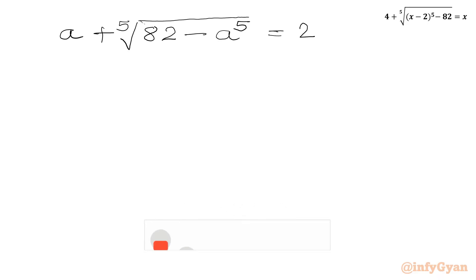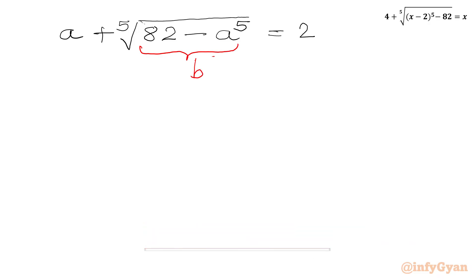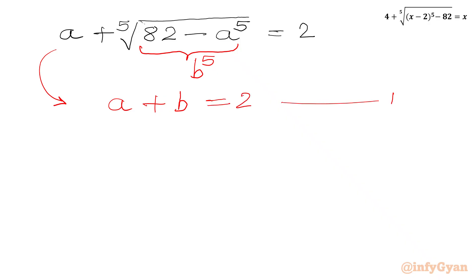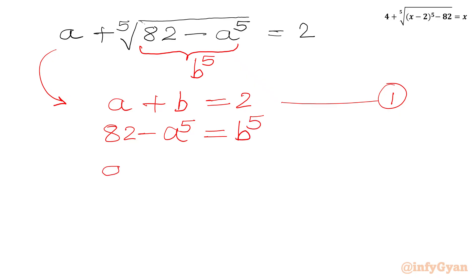Now we will use a second substitution. Let the radicand equal B power 5, so our equation becomes A plus B equal to 2. This is equation number 1. From the substitution, 82 minus A power 5 equals B power 5, which gives us A power 5 plus B power 5 equal to 82. This is equation number 2.